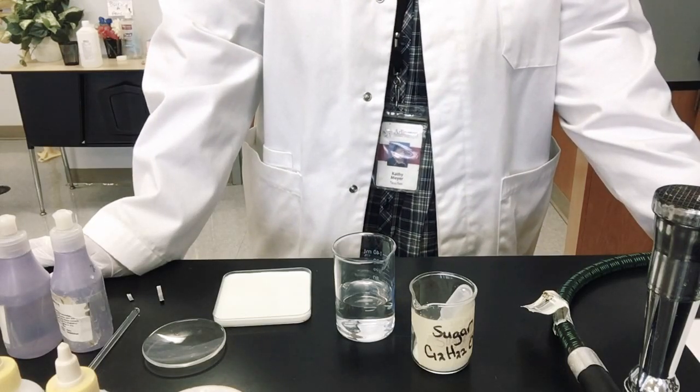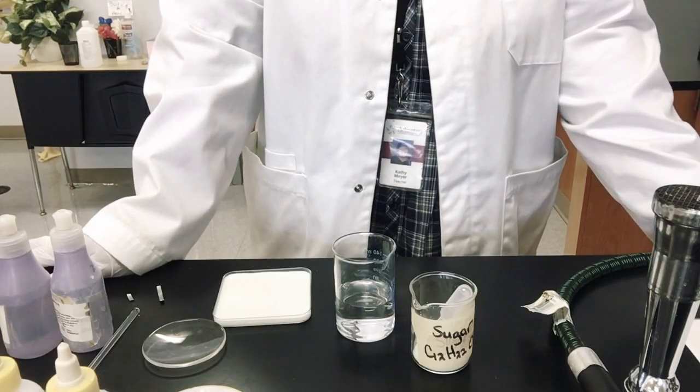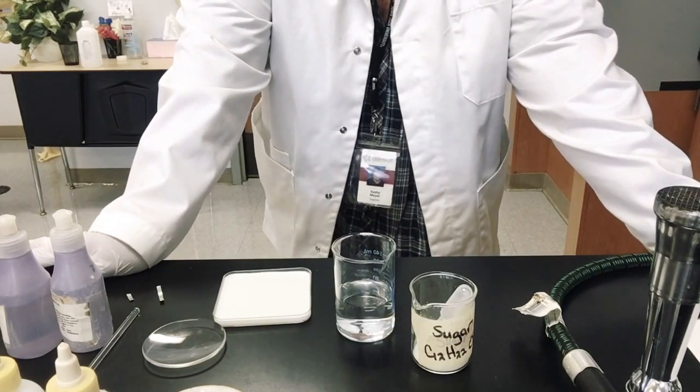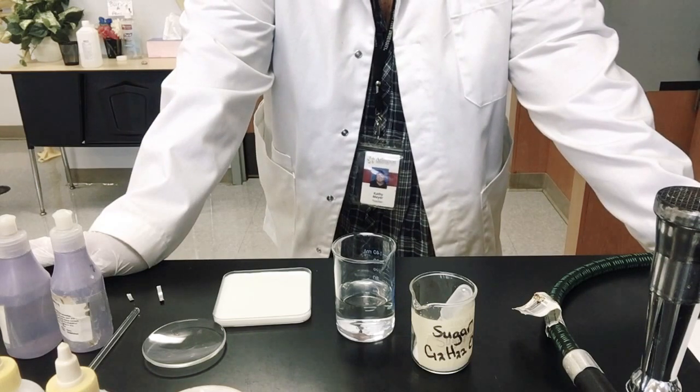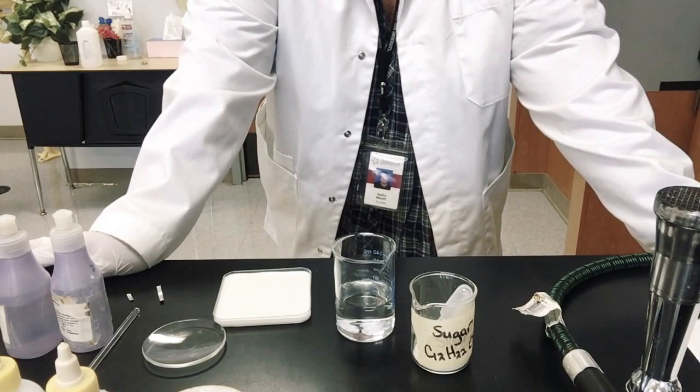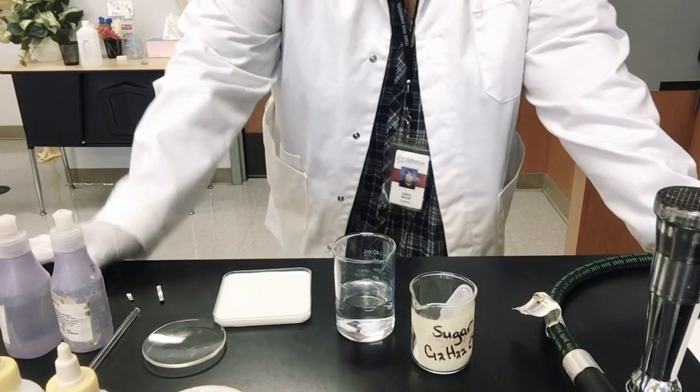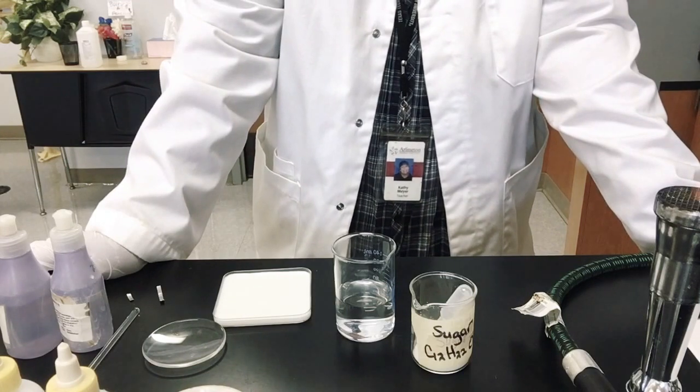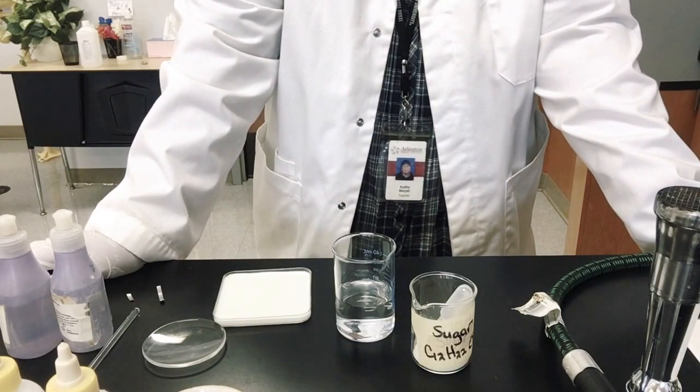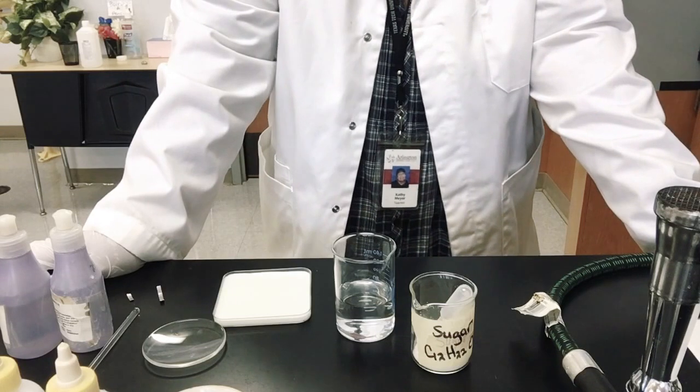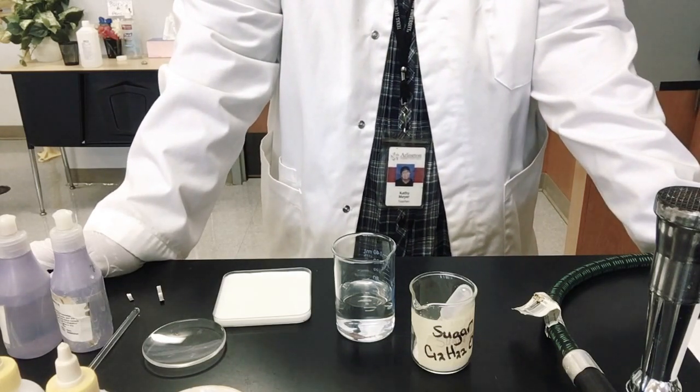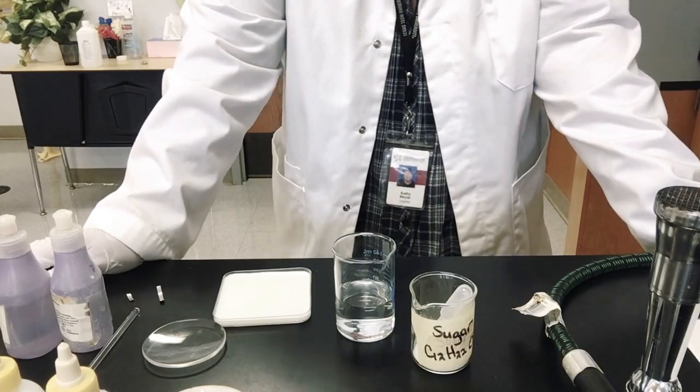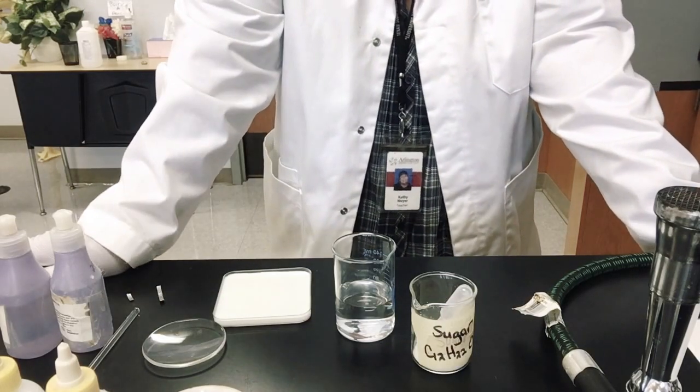Remember for a chemical change something new needs to be formed. So we're going to be looking for bubbles if it bubbles on its own, if there's a temperature change, if there's an odor change. Remember you waft to see if there's an odor change. You're going to look for a color change. You'll look to see if a precipitant is formed. Remember a precipitant is a great way to tell a chemical reaction has occurred. You form something brand new it looks like powder floating around and that's a precipitant.